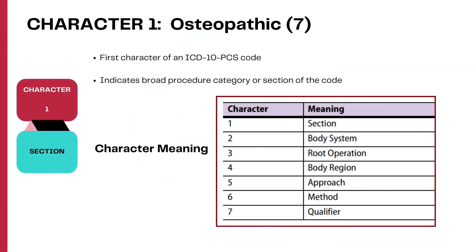In each section, characters have a specific meaning, and this table shows what each character value means in the osteopathic section. Note that the sixth character specifies the method used for the procedure in this section.